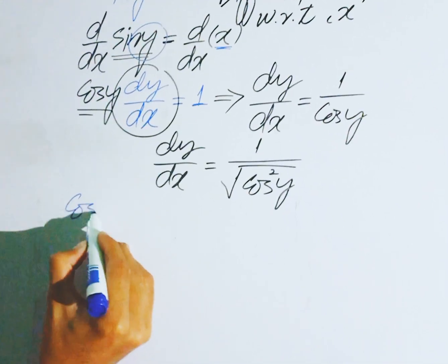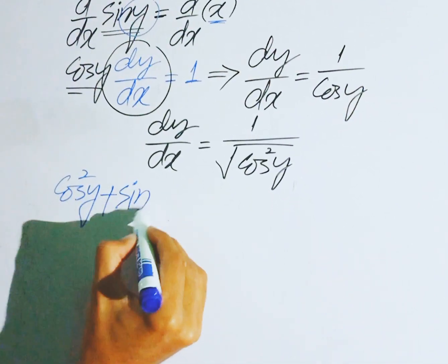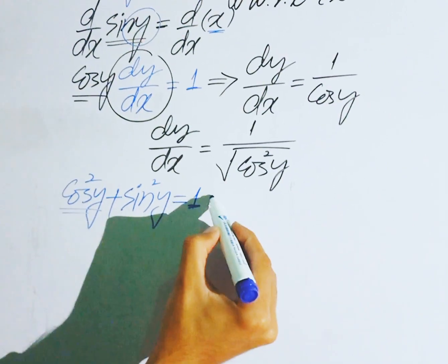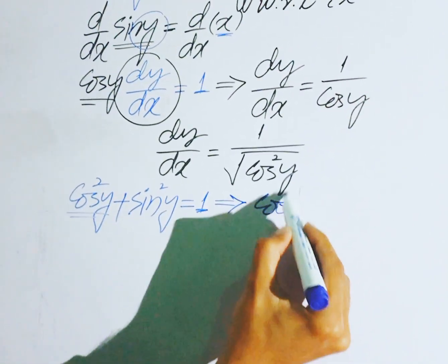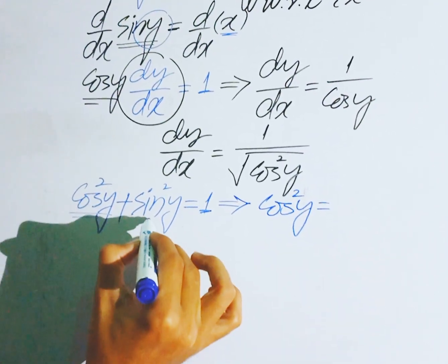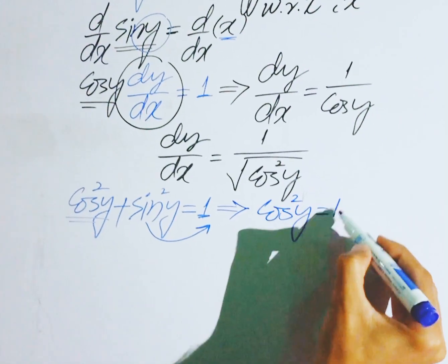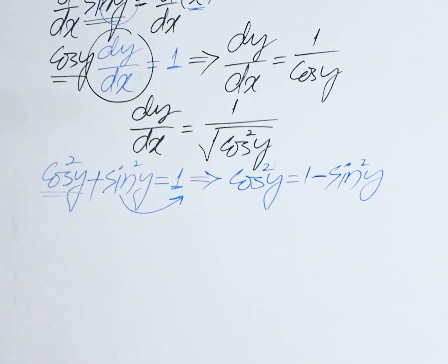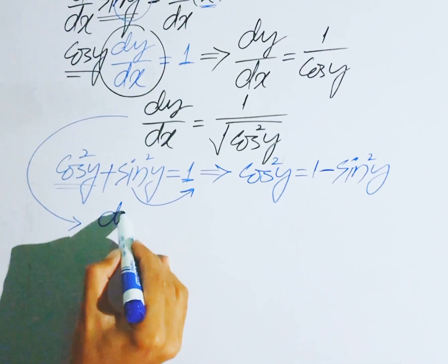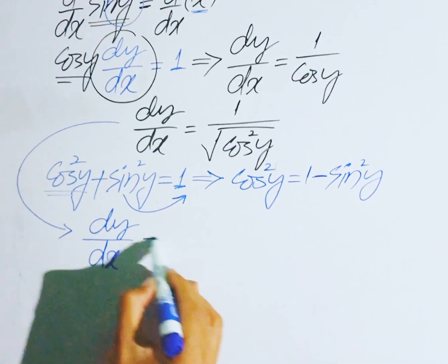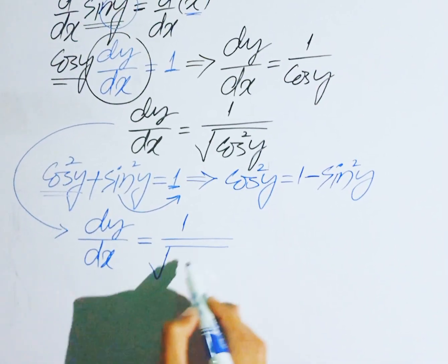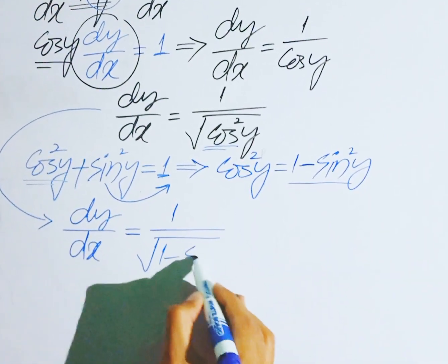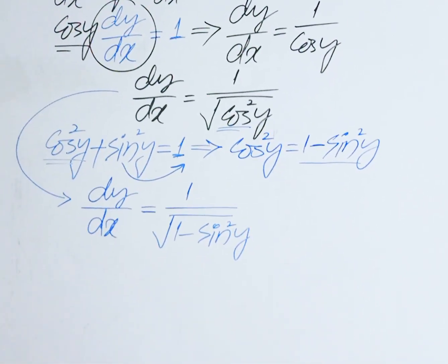We will use the result that cos square y plus sin square y is equal to 1. Find the value of cos square y, so this becomes cos square y is equal to 1 minus sin square y when you shift sin square y to the right side. So the equation becomes dy over dx is equal to 1 divided by square root of cos square y, which is 1 minus sin square y.